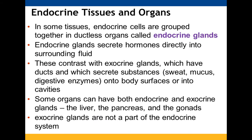Tissues where endocrine cells are grouped together form ductless organs called endocrine glands. Since they have no ducts, they secrete hormones directly into surrounding fluid. Exocrine glands have ducts and secrete substances like sweat, mucus, and digestive enzymes into cavities or body surfaces. Some organs have both endocrine and exocrine glands — your liver, pancreas, and gonads.